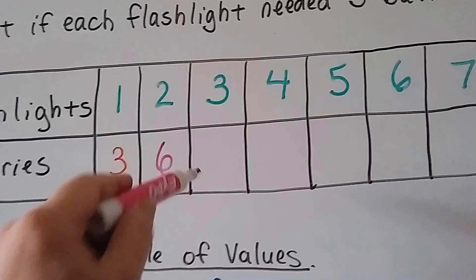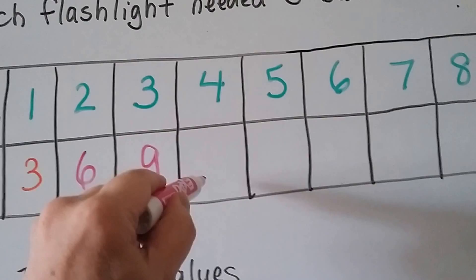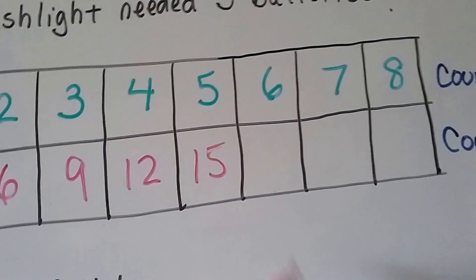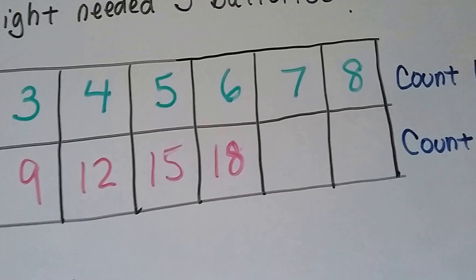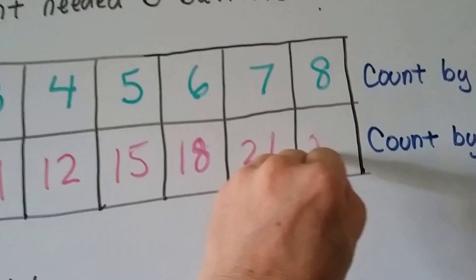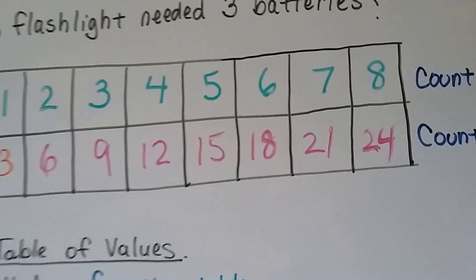Three is six. Three times three is nine. Four times three is twelve. Five times three is fifteen. Six times three is eighteen. Seven times three is twenty-one. And eight times three is twenty-four.